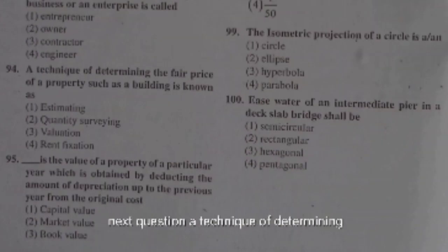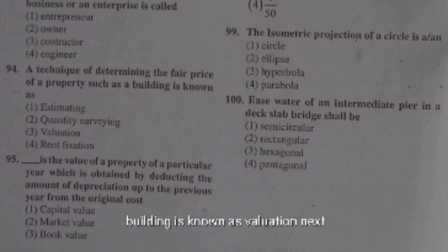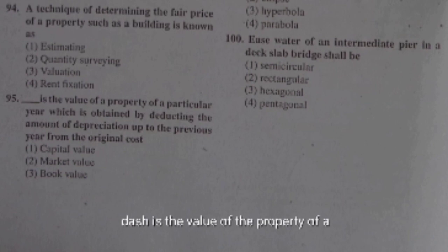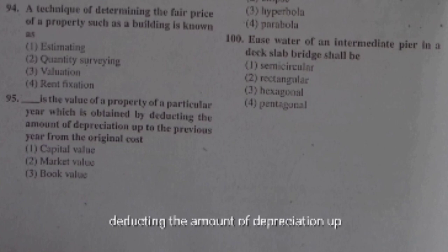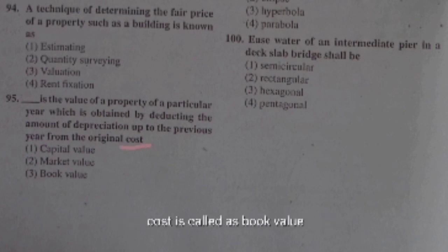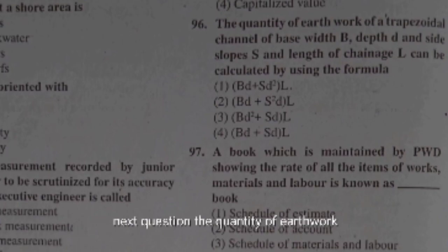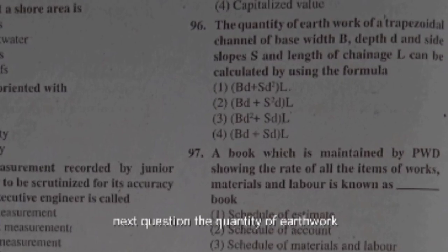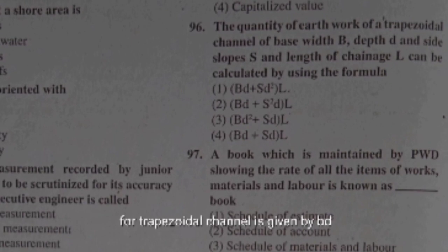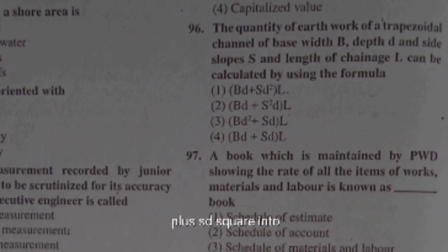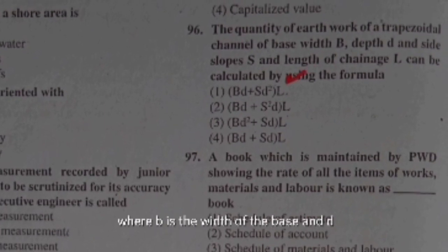The person responsible for setting up a business or enterprise is called an entrepreneur. A technique of determining the fair price of a property such as a building is known as valuation. The value of a property in a particular year, obtained by deducting the amount of depreciation up to the previous year from the original cost, is called book value.